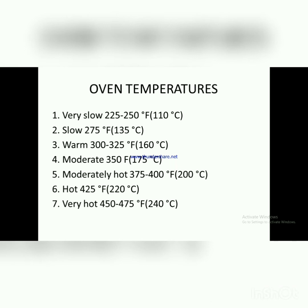Oven temperatures: Very slow — 225 to 250°F or 110°C. Slow — 275°F or 185°C. Warm — 300 to 325°F or 160°C. Moderate — 350°F or 175°C. Moderately hot — 375 to 400°F or 200°C. Hot — 425°F or 220°C. Very hot — 450 to 475°F or 240°C.